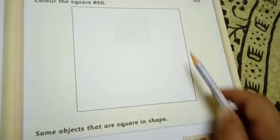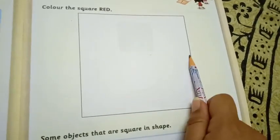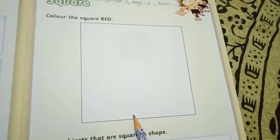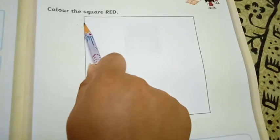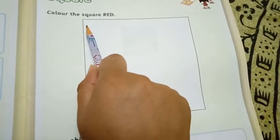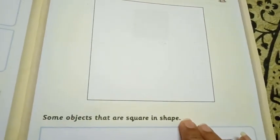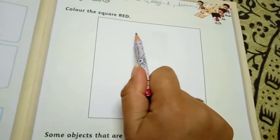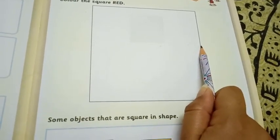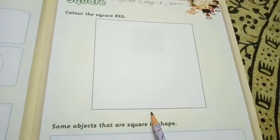So children. Now can you see? This shape has got sides. This shape has got corner also. Okay. So children, now we will count. So how many sides are there in the square? So let's count with me children. One, two, three, four. How many sides are there? One, two and three, four.